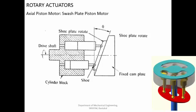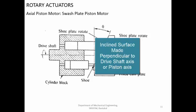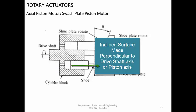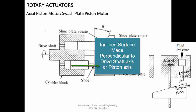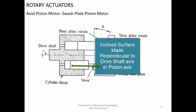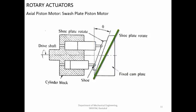Now what happens if this inclined surface is perpendicular to the axis? If the inclined surface is perpendicular to the axis and you supply high pressure fluid, the piston will come outward and try to push the flat surface backwards. There will not be any motion generated because there is no tangential component — no component of force along the surface of the plate. There is only force perpendicular to the surface, so no rotary motion is possible. If the angle is more, the stroke length of the piston will also be more.